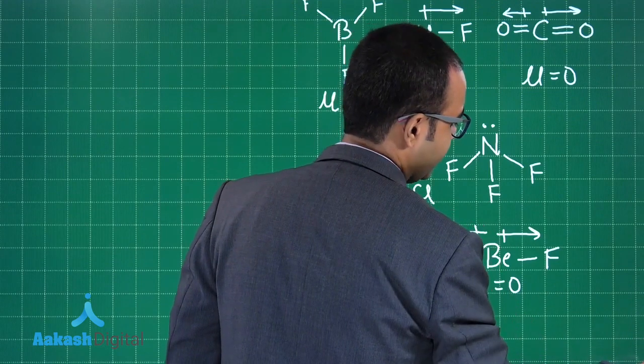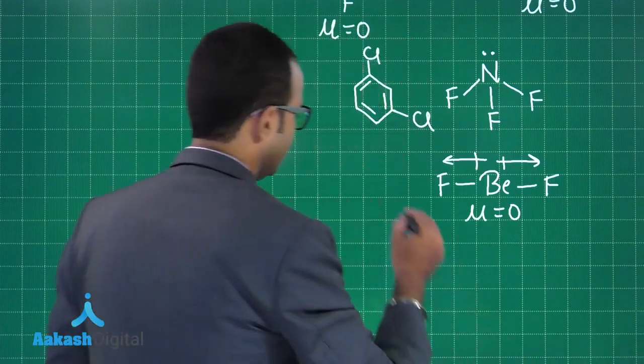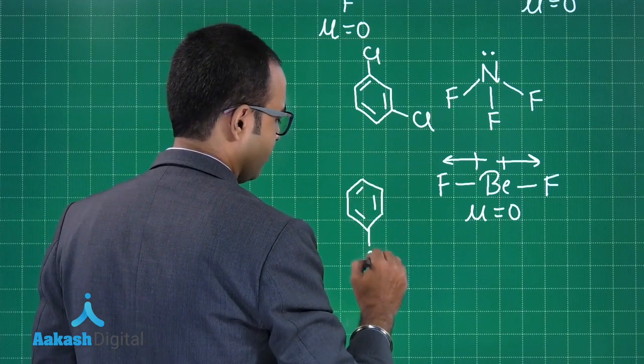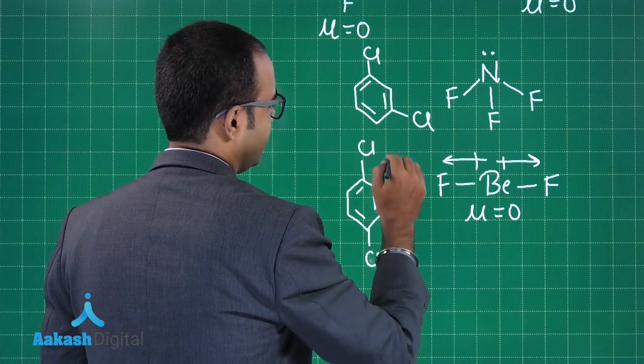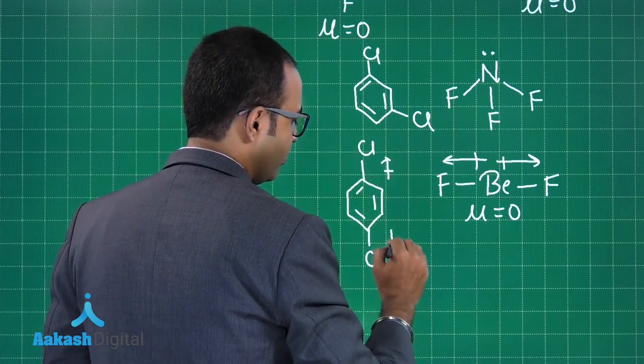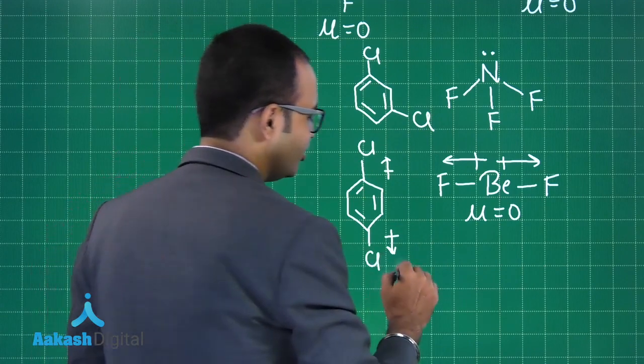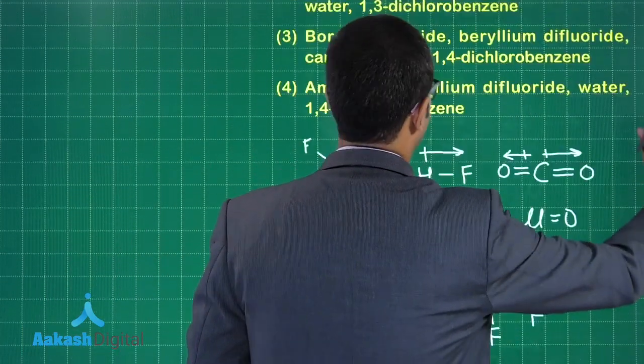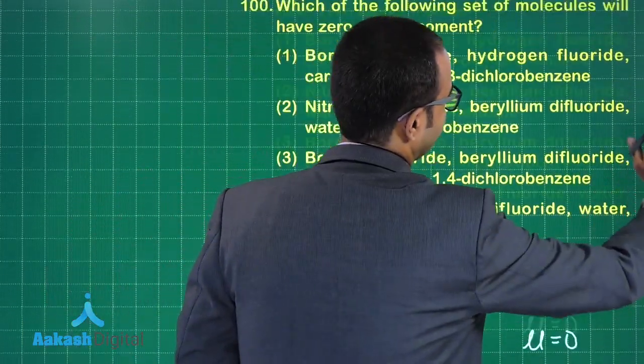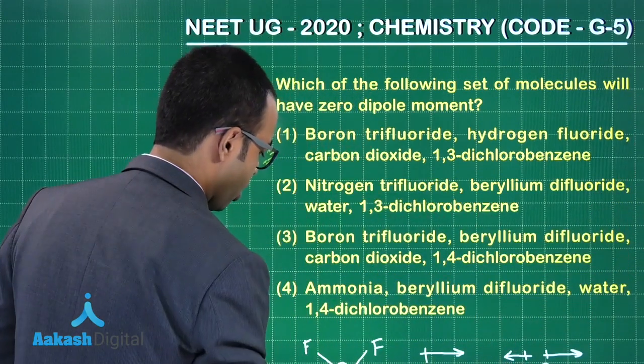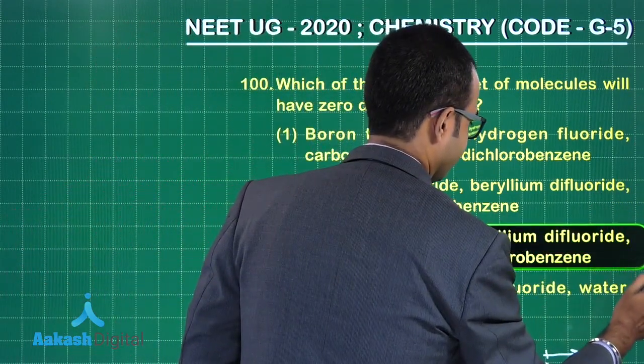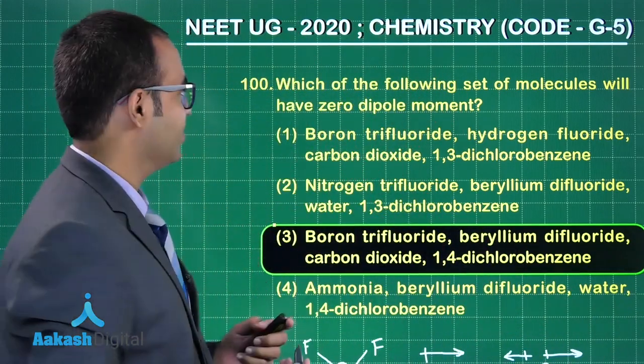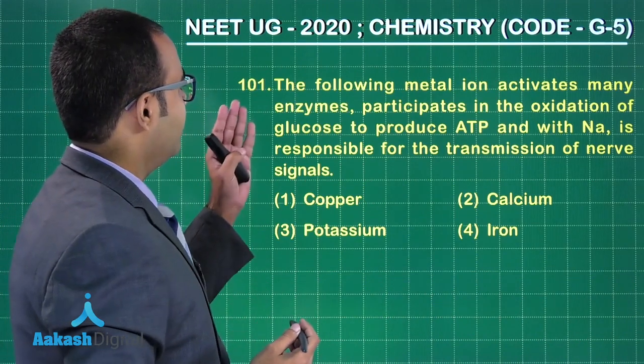Carbon dioxide, zero dipole moment. 1,4-dichlorobenzene, what will be the structure? Are the two dipole moments canceling each other? Yes. So this will also have a zero dipole moment. So the final answer to this question is option 3. I hope you have understood this.